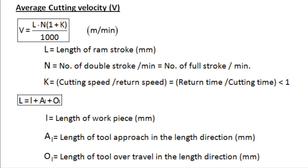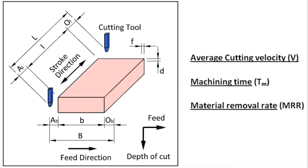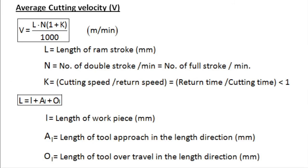The expression for capital L, the length of RAM stroke, is equal to L plus AL plus OL, where small l is the length of workpiece in millimeters and AL is the length of tool approach in the length direction in millimeters. So capital L equals L plus AL plus OL in the direction of stroke. Since length is in millimeters, dividing by 1000 converts it to meters, which is why the unit of average cutting velocity is meters per minute.